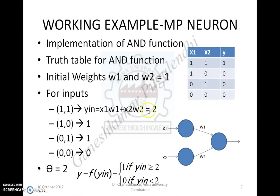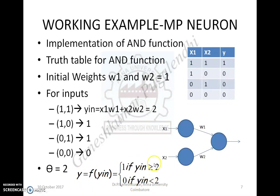After calculating net input values for all possible inputs, you observe the pattern of the net input. Based on that pattern, you decide the value of theta. The pattern of net inputs is 2, 1, 1, 0. If you choose the threshold theta as 2, then you get the correct output: the output is 1 if y_in >= 2, and 0 if y_in < 2.